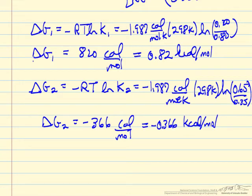So now we can do the calculation for delta G2. I've substituted the numbers the exact same way, and we get delta G2. Notice delta G1 is positive, but delta G2 is negative.